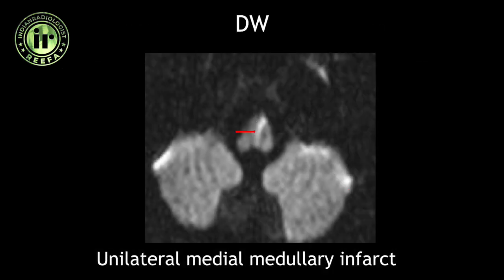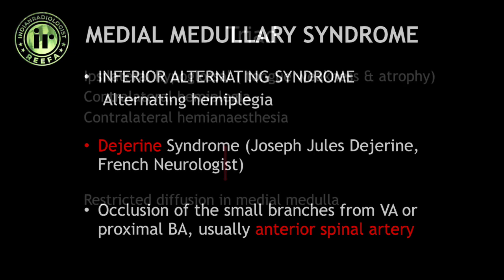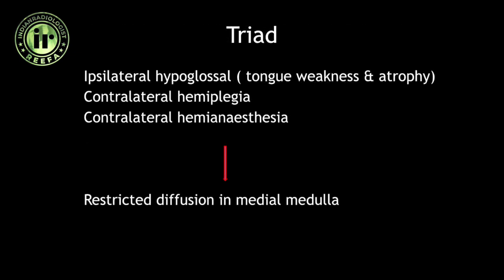Another similar case showed unilateral medial medullary infarct, with restricted diffusion on the left side of the medial medulla. Medial medullary syndrome is also called the inferior alternating syndrome or Dejerine syndrome. It is usually due to occlusion of small branches from the vertebral artery or proximal basilar artery, typically involving the anterior spinal artery. The classical triad consists of ipsilateral hypoglossal nerve involvement, contralateral hemiplegia, and contralateral hemianesthesia, along with restricted diffusion in the medial medulla on MRI.